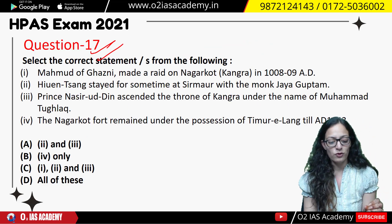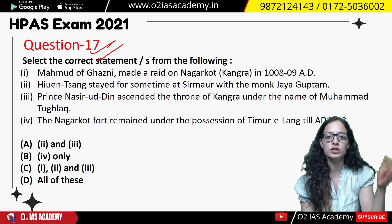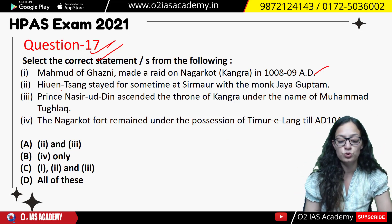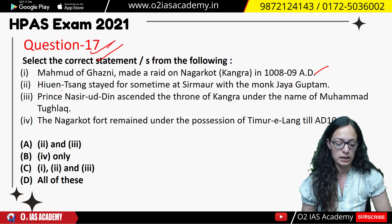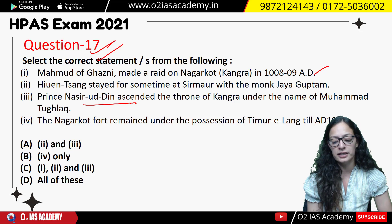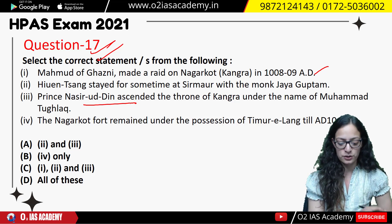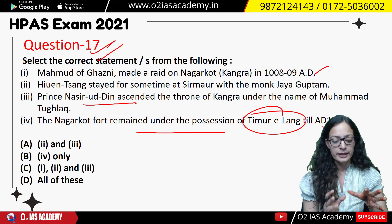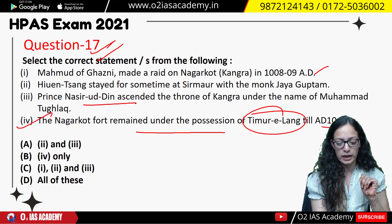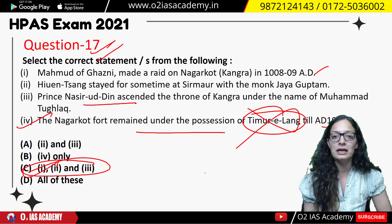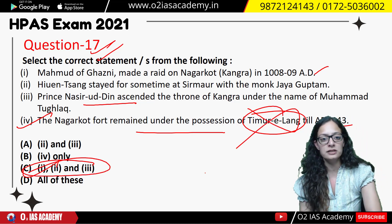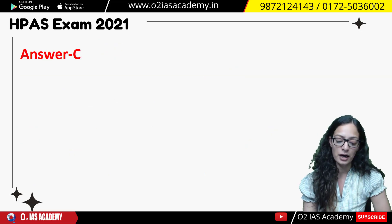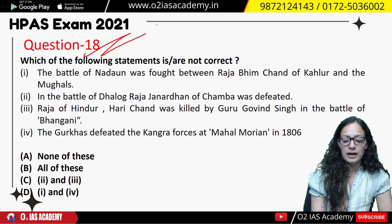Question 17 was about Mahmud Ghaznavi — a question that comes every time. Statements: he raided Nagarkot fort in 1008 and 980; Huna San lived in Sirmaur as Jaya Guptam; Nasiruddin ascended the throne of Kangra in the name of Muhammad bin Tughlaq; Nagarkot fort remained in Timur-i-Lang's possession in 1043 AD. Only the last statement was incorrect — Timur-i-Lang just came and went; at that time Nagarkot was still under Mahmud of Ghazni's control. So the correct answer was 1, 2 & 3. This type of raid question is asked every time, including in previous ATS exams.